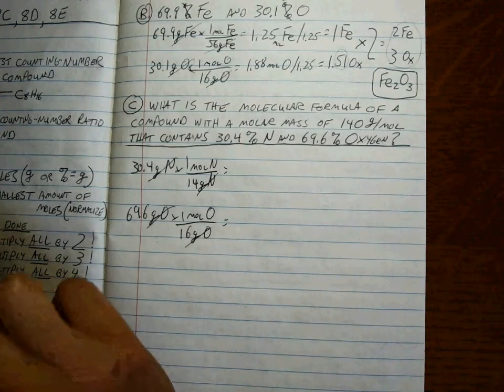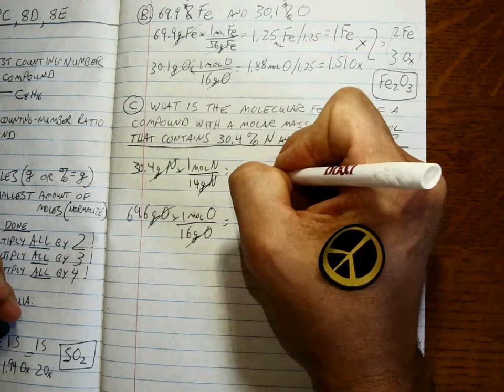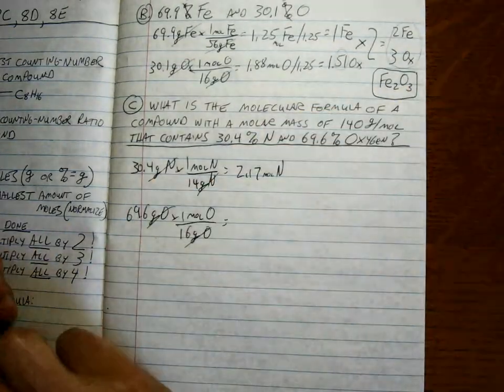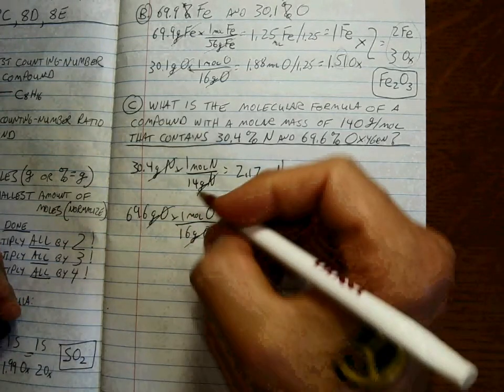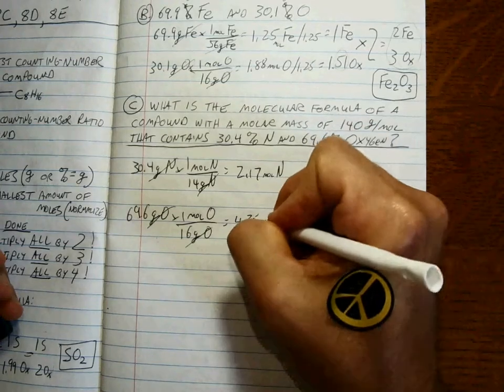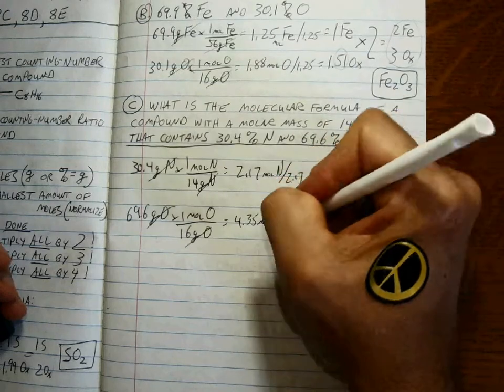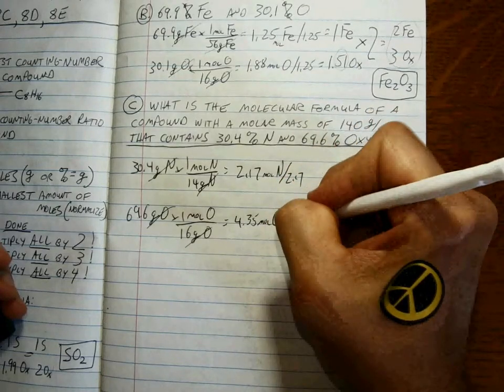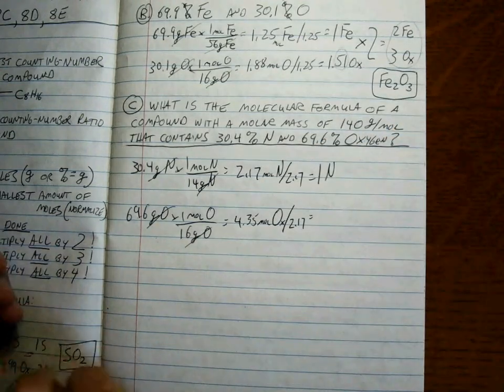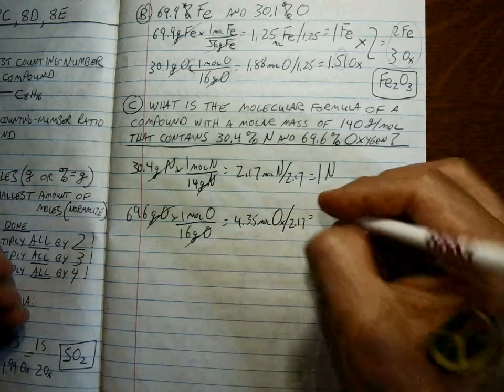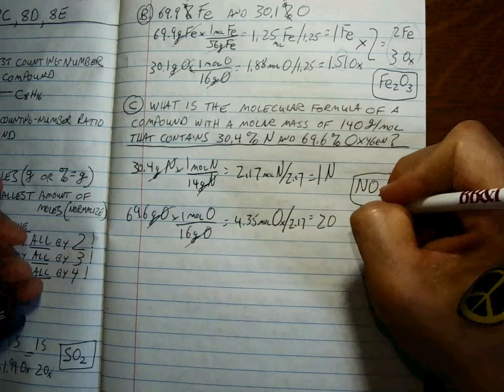30.4 divided by 14 is 2.17 moles of nitrogen. 69.6 divided by 16 is 4.35 moles of oxygen. Divide by the smallest one. Always going to have a one associated with one of them. 2.17. Okay, that's two. Okay, so we have NO2 is our empirical formula.